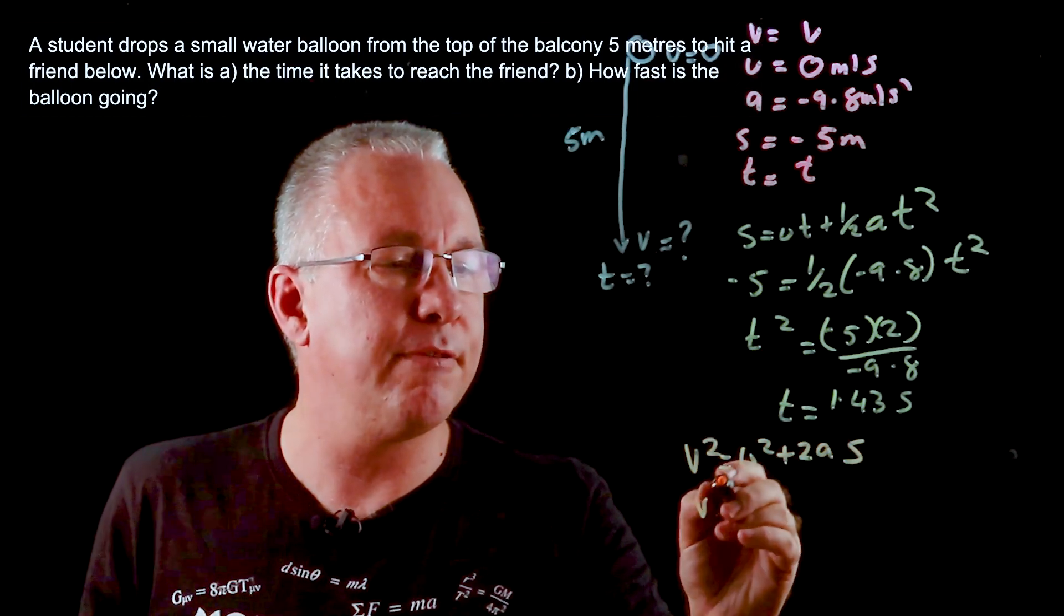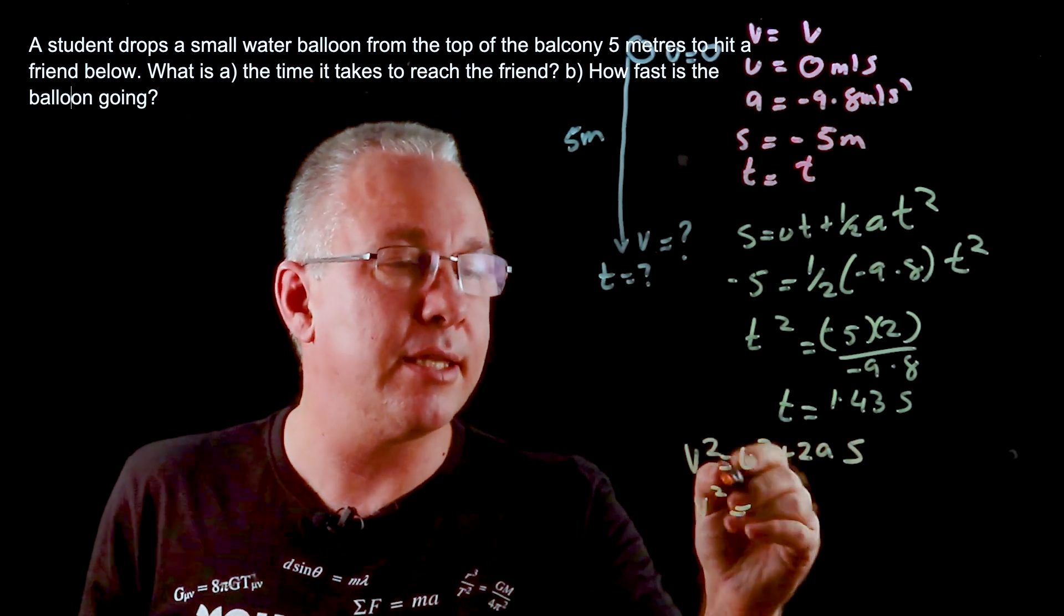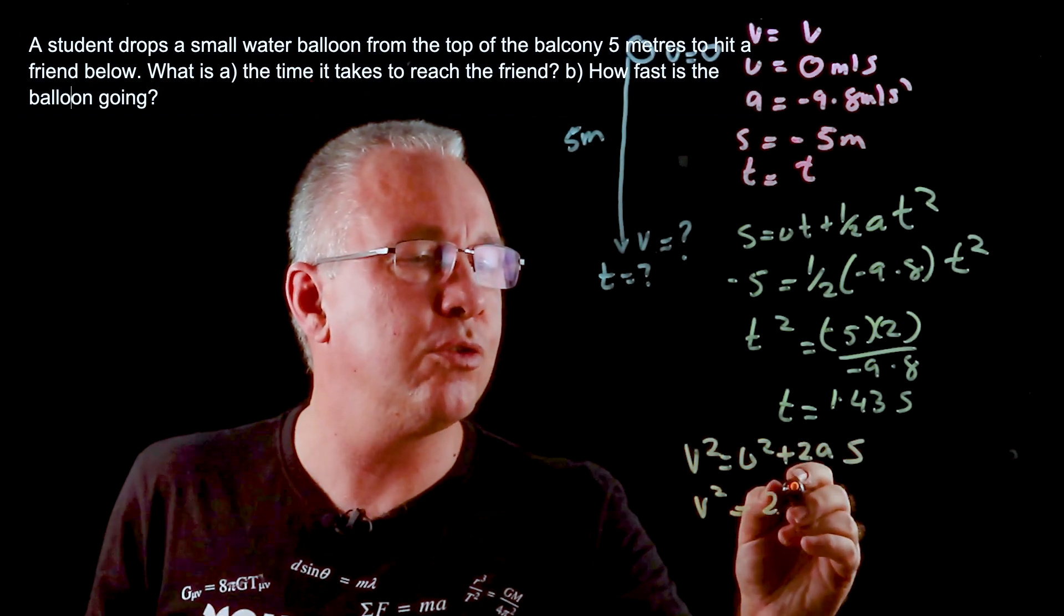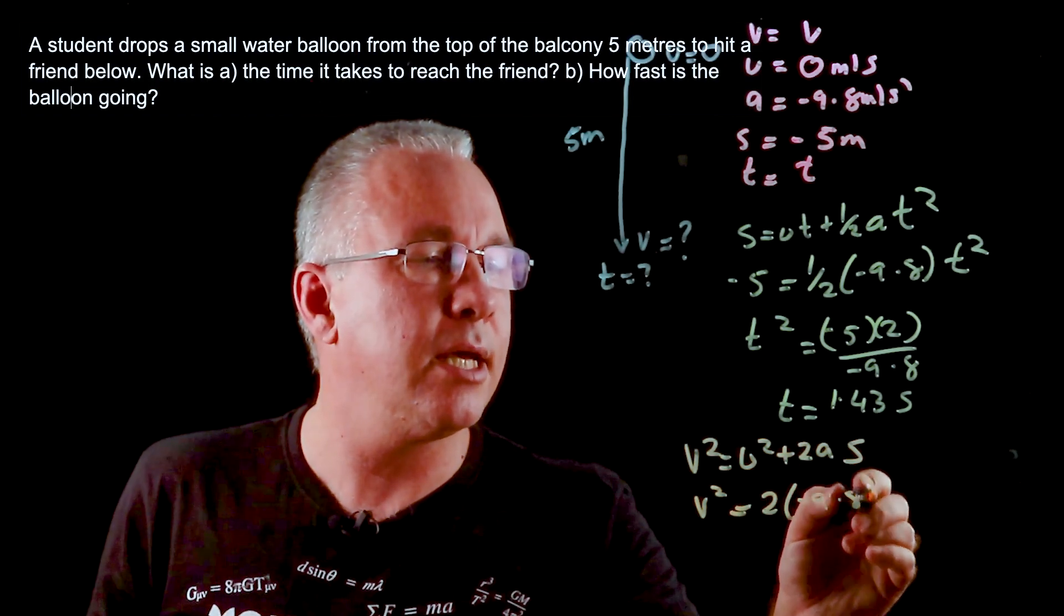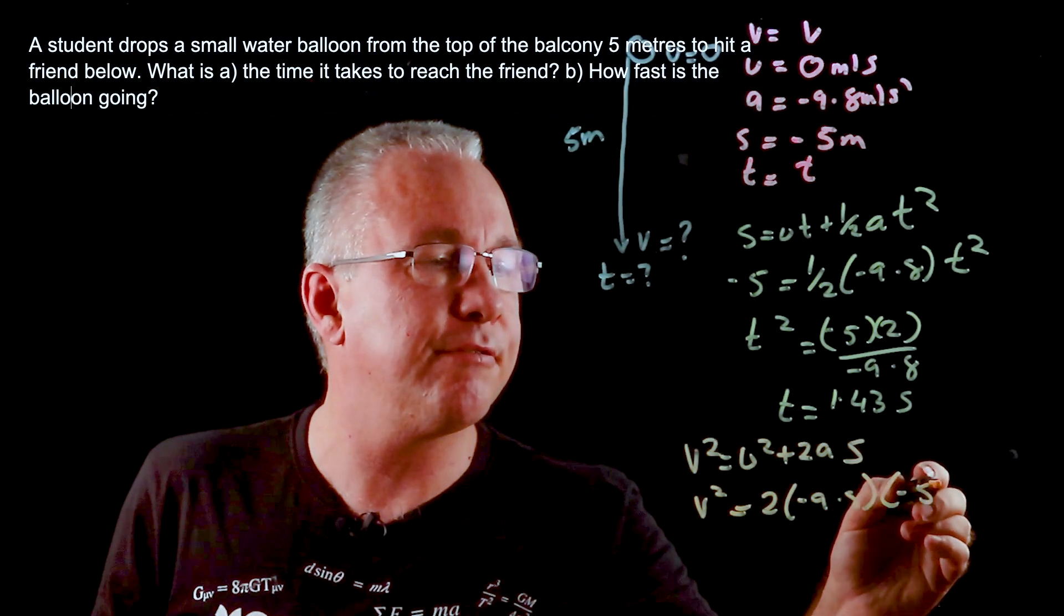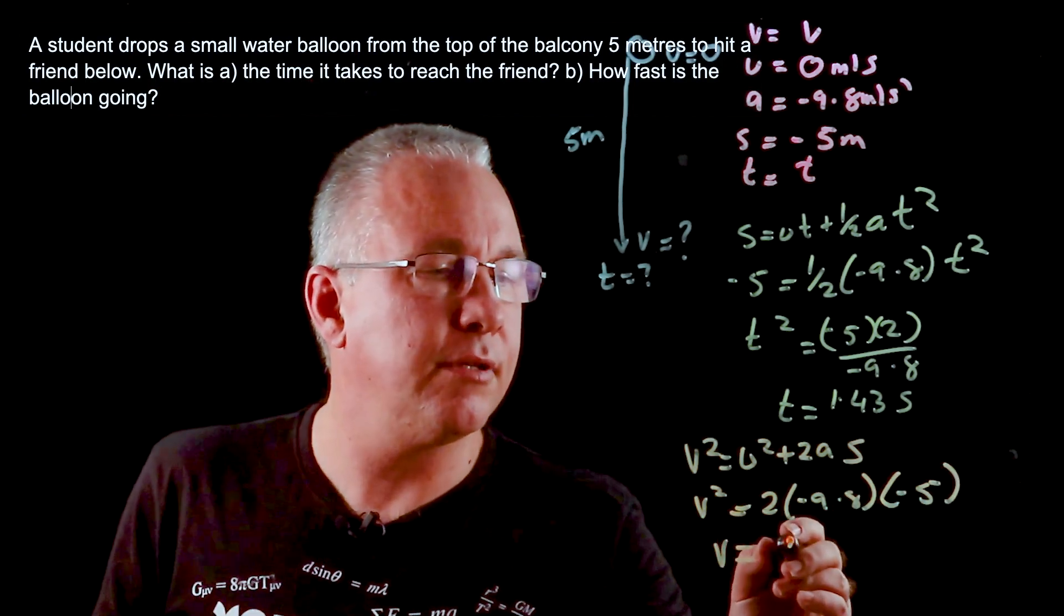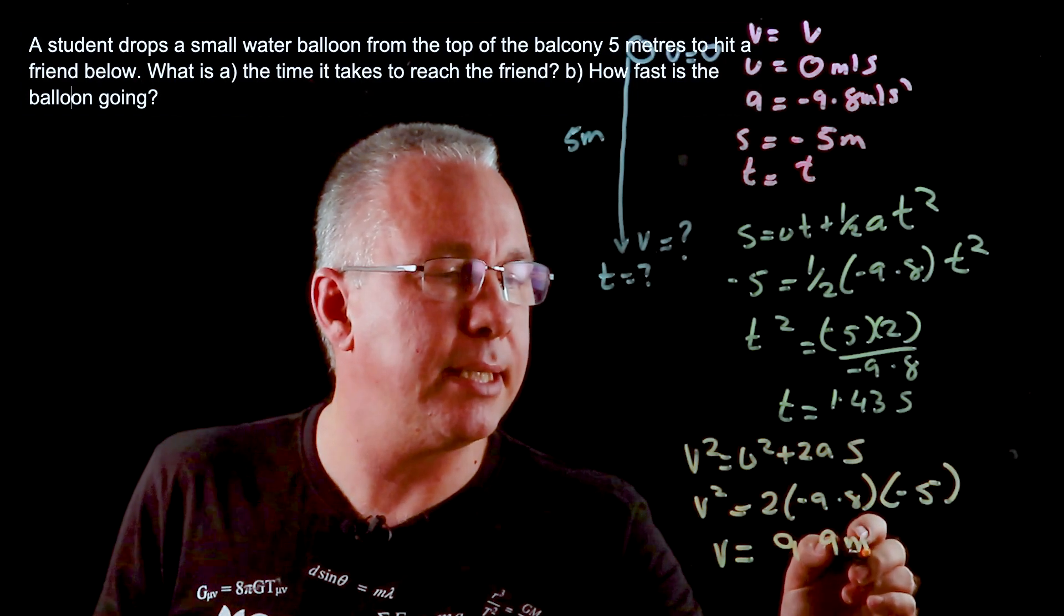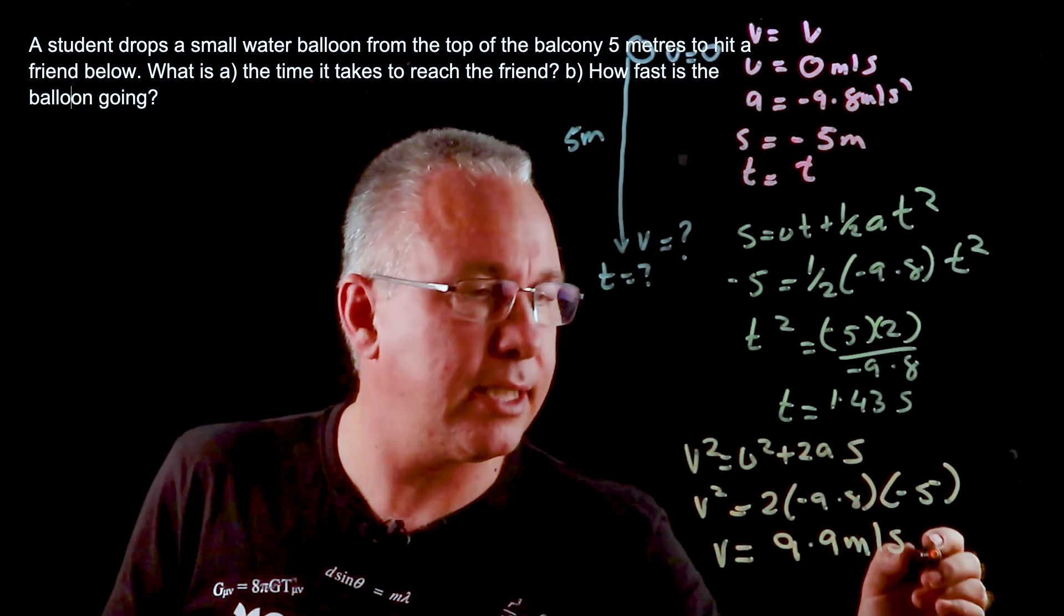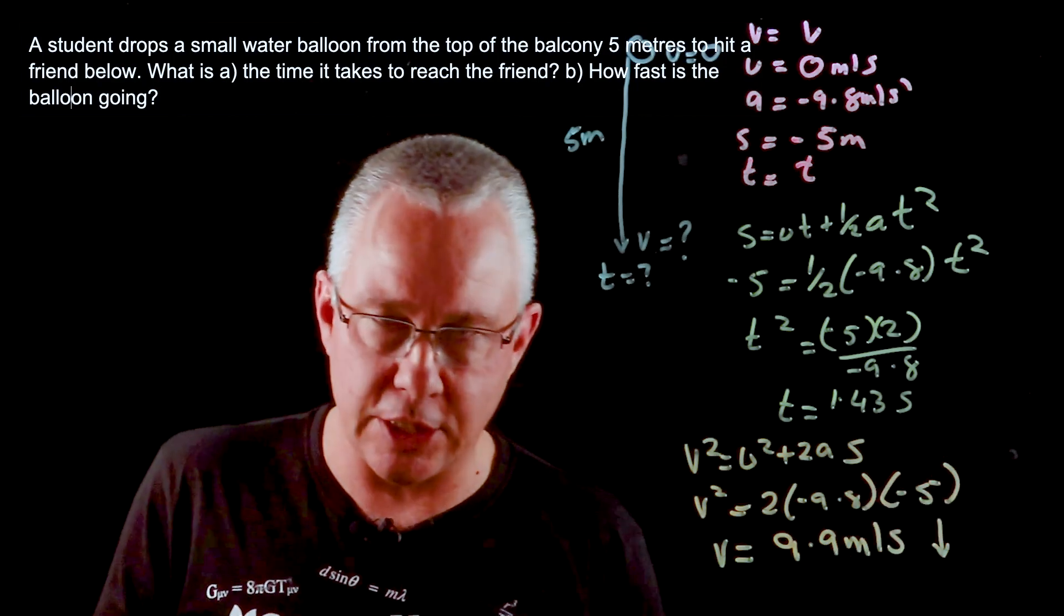In this case, V²—now U² is zero—so I have 2 × (-9.8) × (-5). Doing the calculation, I get a value of 9.9 meters per second, and it's a vector in the downward direction.